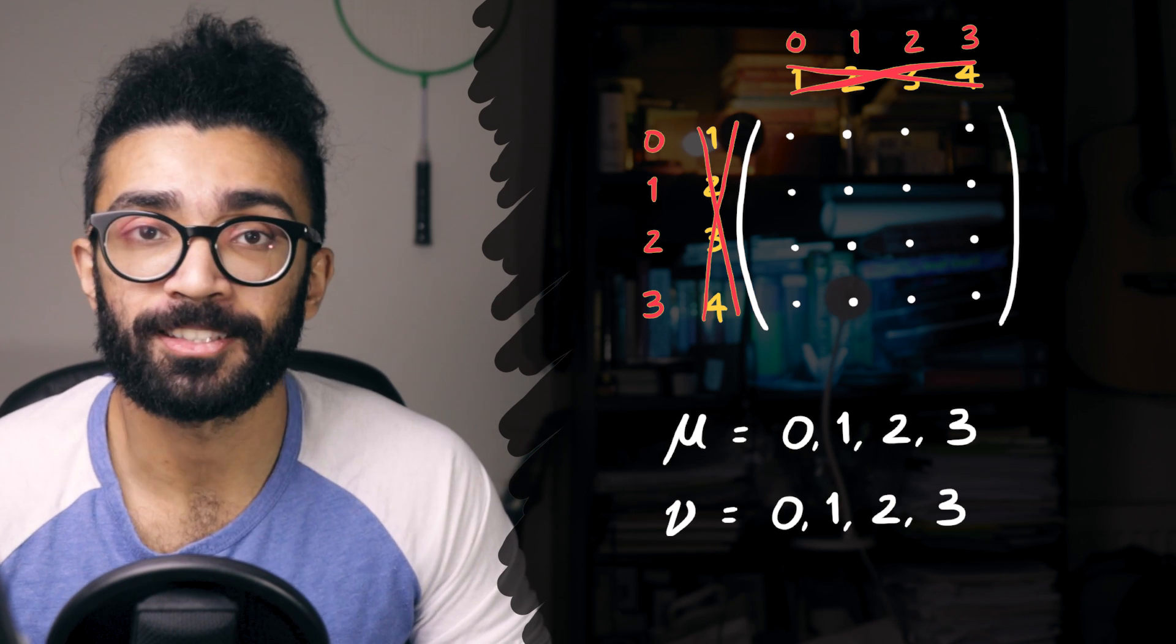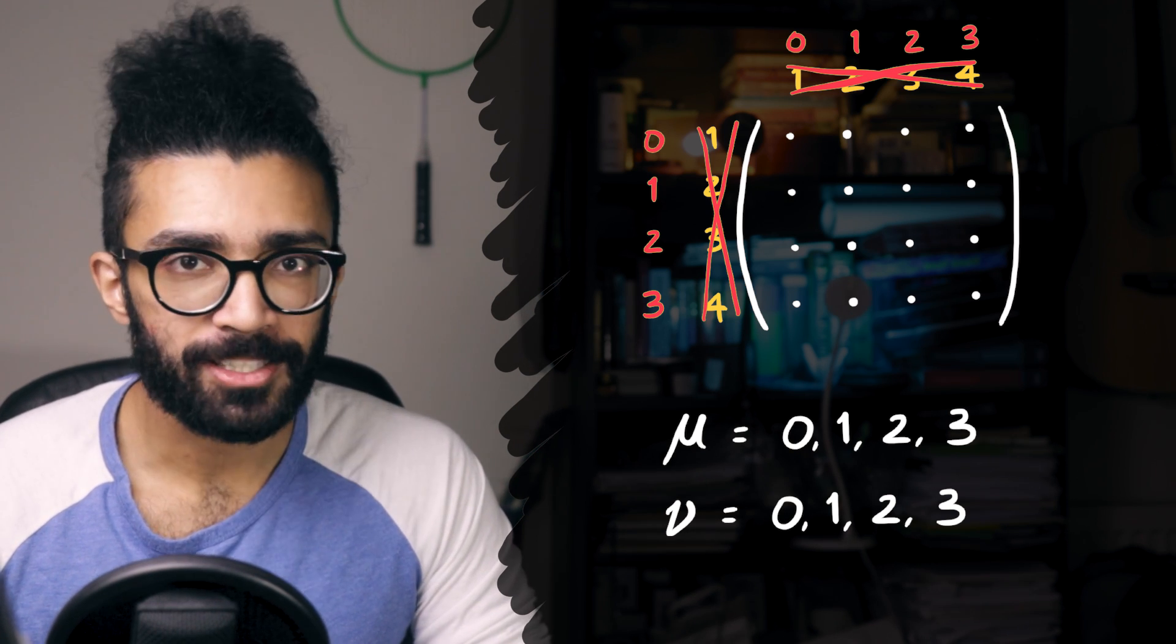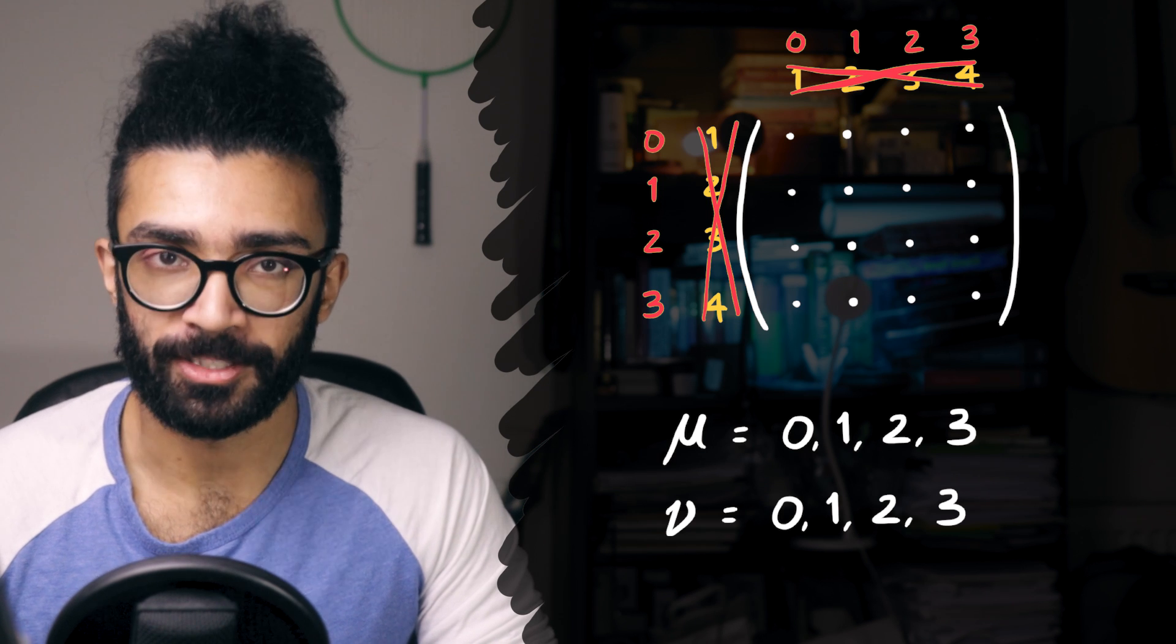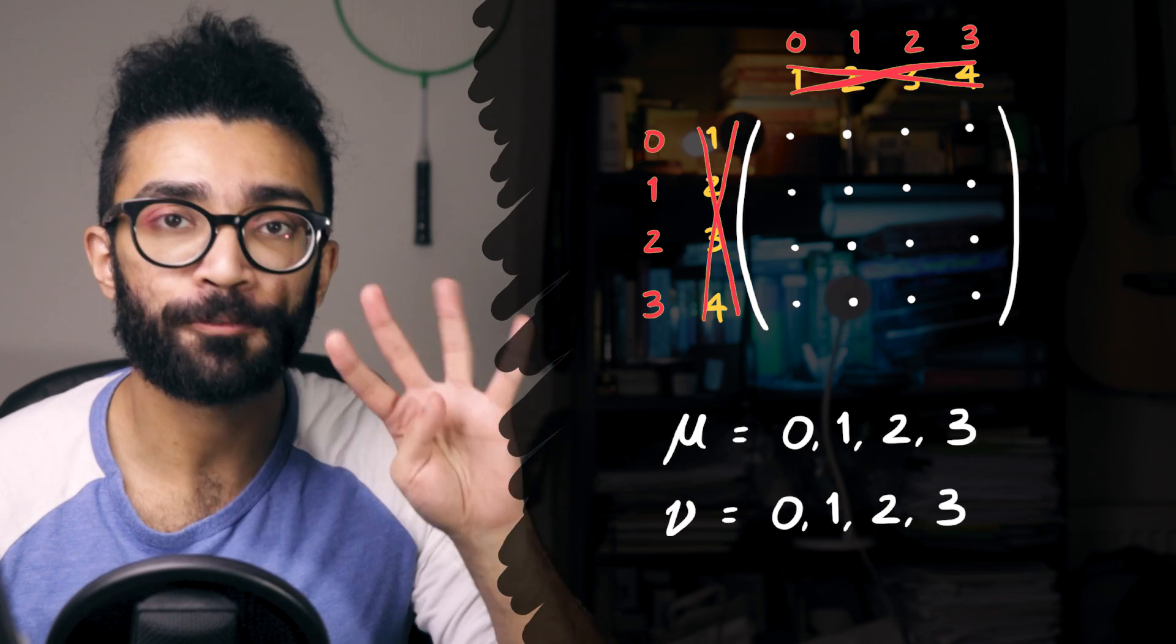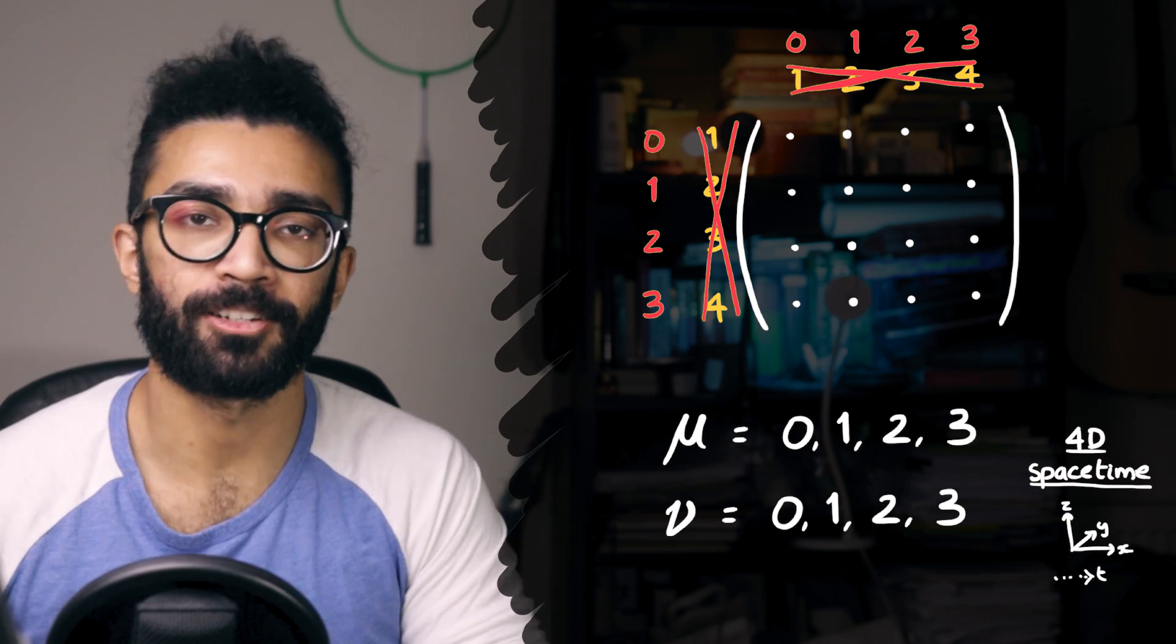Again, like I said, for our purposes, this is mathematical convention, but it actually plays really nicely into some relativistic ideas. Specifically, the subscripts 0, 1, 2, and 3 refer to the four different dimensions used in the theories of relativity.